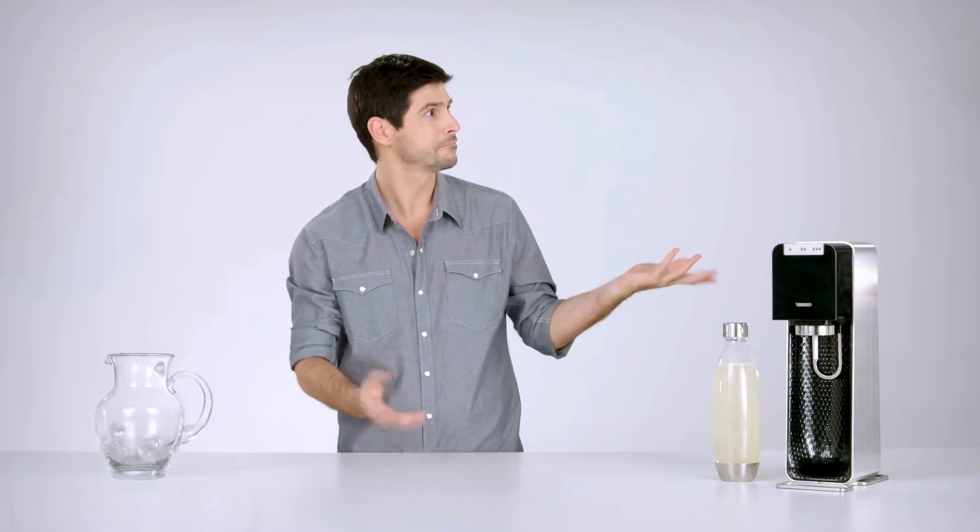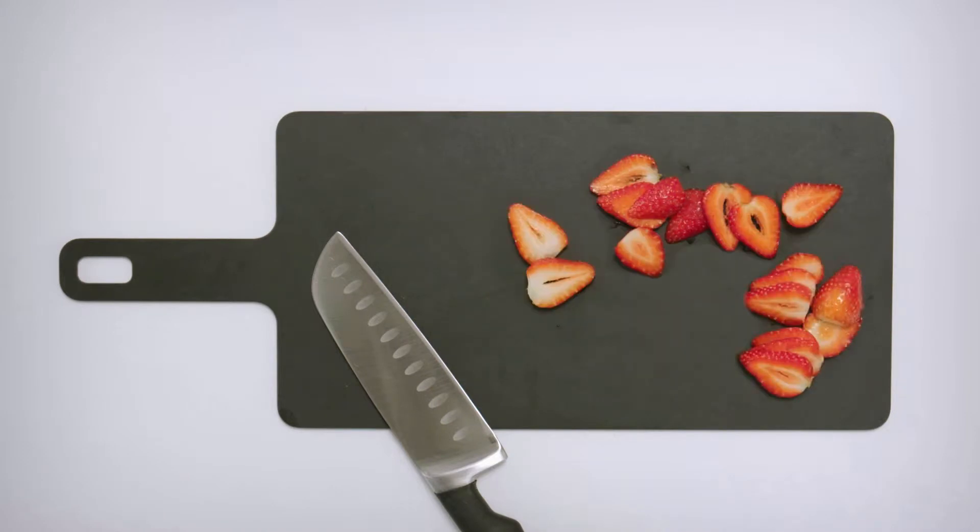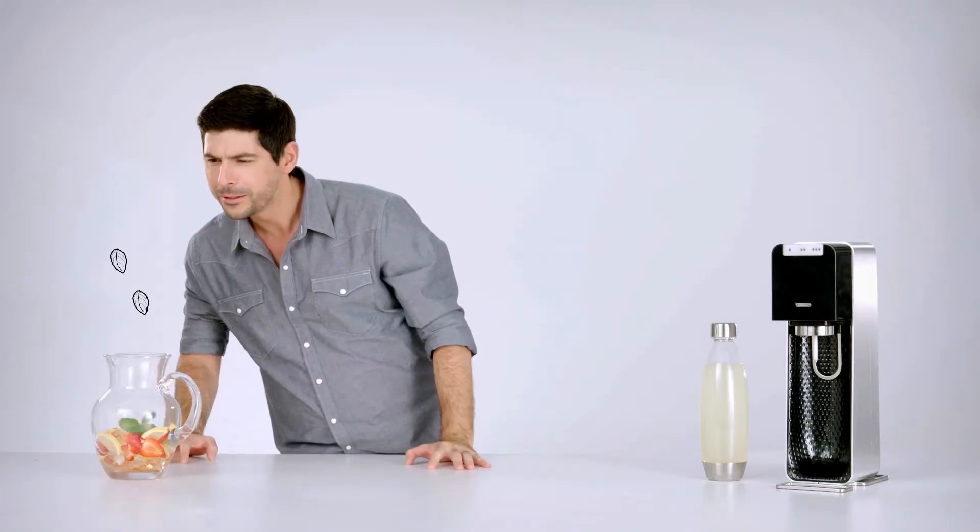Add ice to a pitcher, slice the lemon, chop the strawberries and toss them into the pitcher followed by the basil leaves.